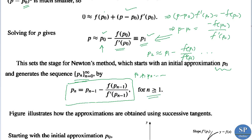If we replace n = 1 we get p₁ = p₀ - f(p₀) / f'(p₀), and if we put n = 2 we get p₂ = p₁ - f(p₁) / f'(p₁), and so on. We will get a sequence of approximated roots for the equation f(x) = 0.